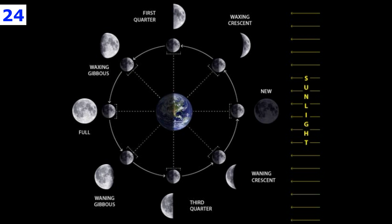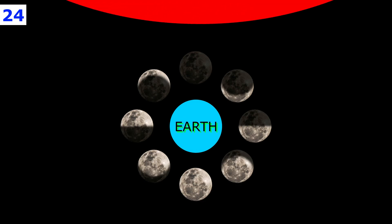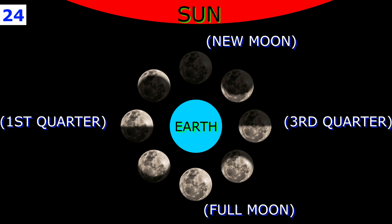Before we delve into each phase individually, let's take a moment to orient ourselves in the moon phases diagram, beginning with imagining Earth at the center of the illustration and the sun adjacent to the new moon. Think of the phases labeled new moon, first quarter, full moon, and third quarter as the numbers 12, 9, 6, and 3 on a clock respectively.